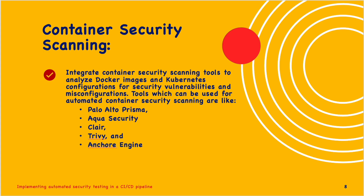Next is container security scanning. Integrate container security scanning tools to analyze Docker images and Kubernetes configurations for security vulnerabilities and misconfigurations. Tools for automated container security scanning include Palo Alto Prisma, Aqua Security, Clair, Trivy and Anchor Engine. This ensures that containers are secure and comply with security best practices before deployment.